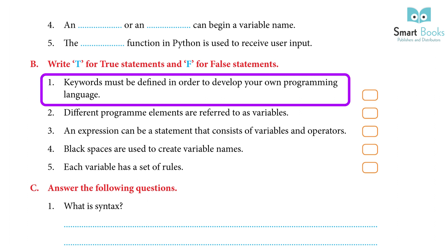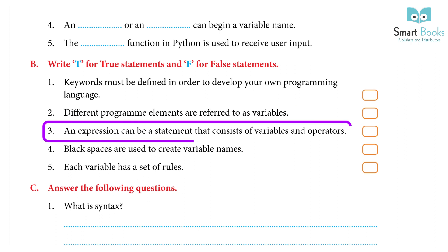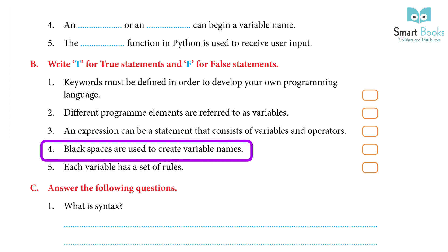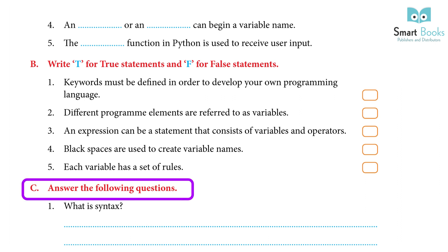Write T for true and F for false: 1. Keywords must be defined in order to develop your own programming language. Answer: True. 2. Different programming elements are referred to as variables. Answer: False. 3. An expression can be a statement that consists of variables and operators. Answer: True. 4. Black spaces are used to create variable names. Answer: False. 5. Each variable has a set of rules. Answer: True.